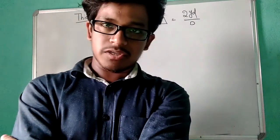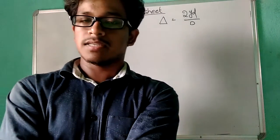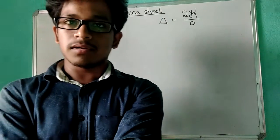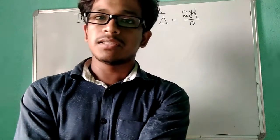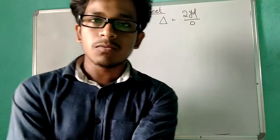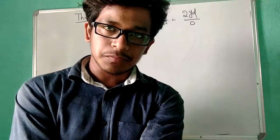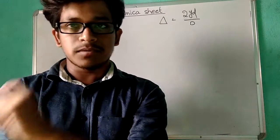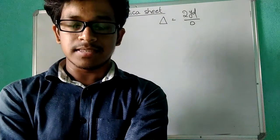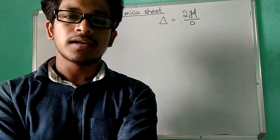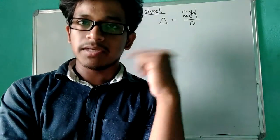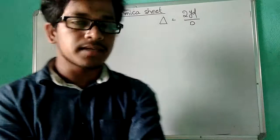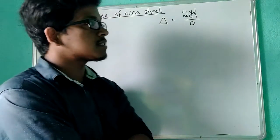Hello my dear students. In last class we studied two types of interference considering the splitting of the wavefront, like our Young's double slit experiment, and another one is by prism. Now we'll see one application of these two. In these two cases, we are getting some width of the bright and dark fringes, then path difference between two waves coming from source S1 and S2. We are able to calculate that path difference, and I have written the formula of the path difference, that is delta.